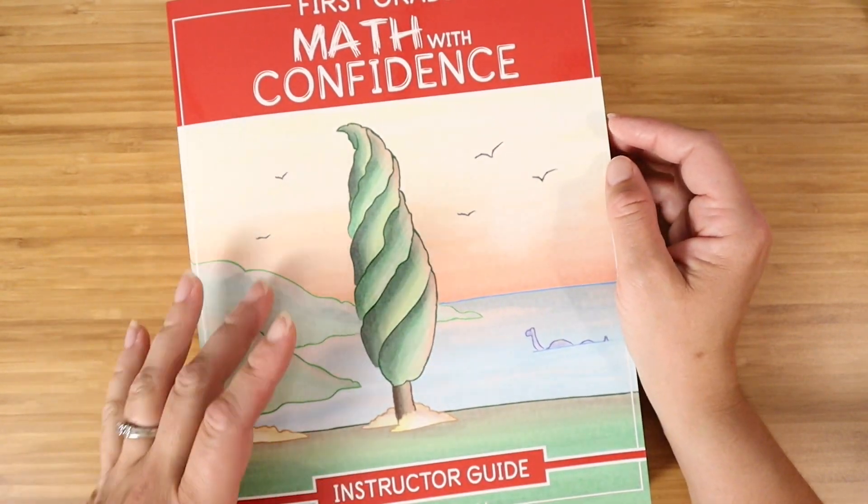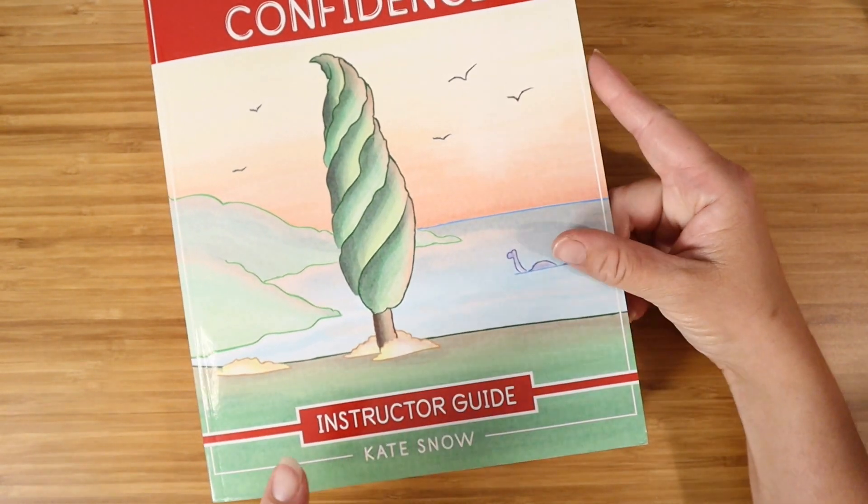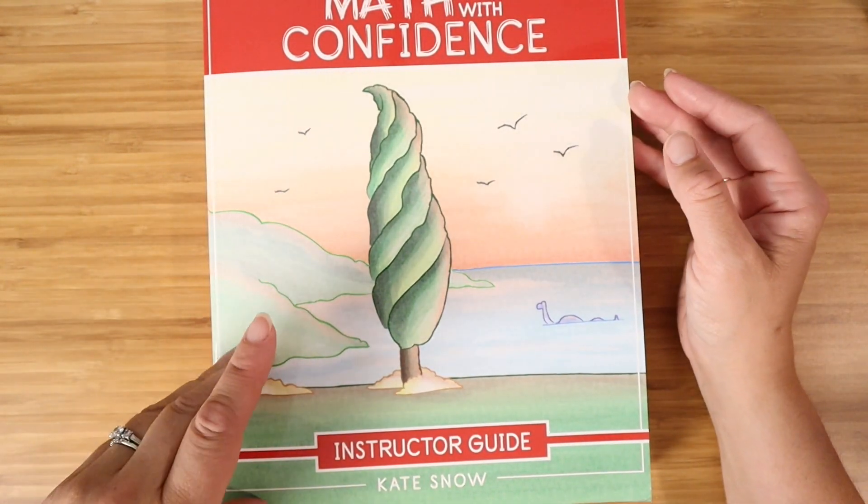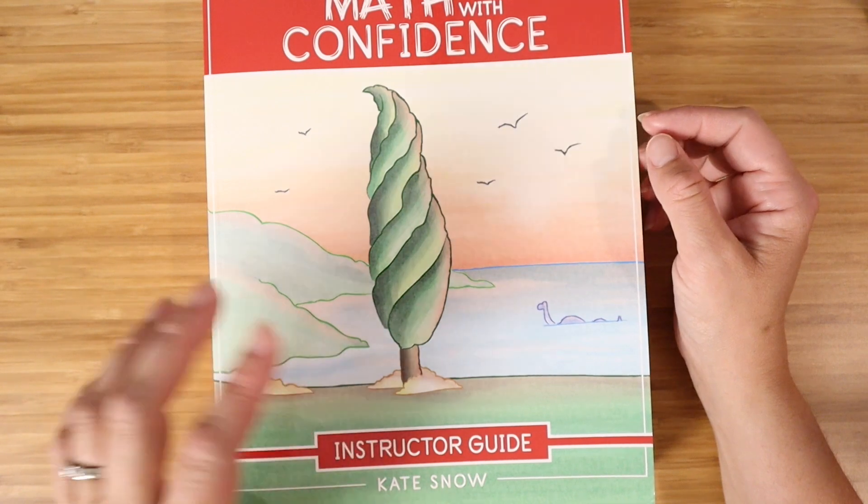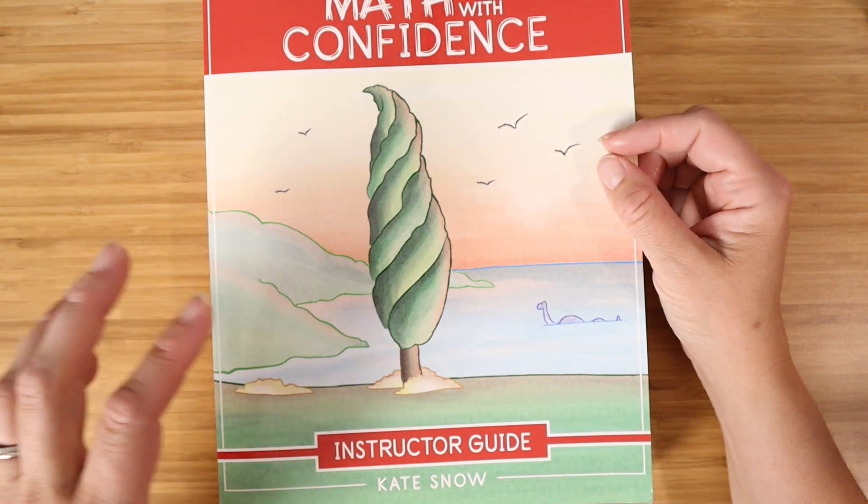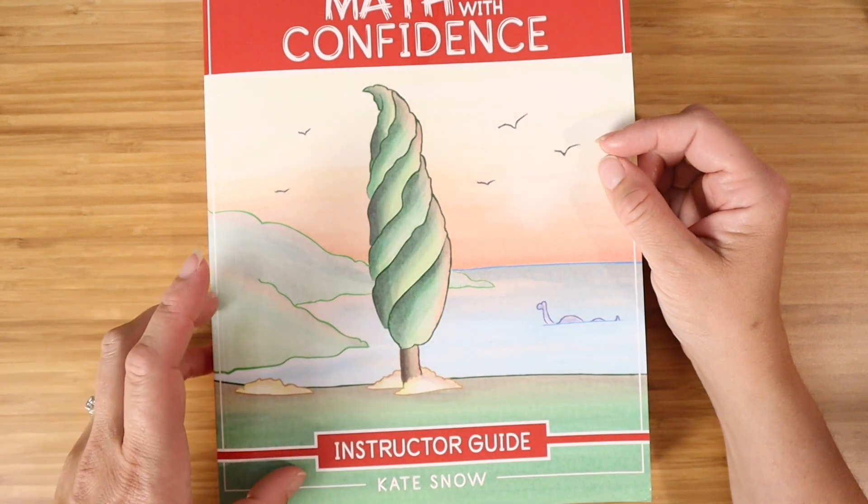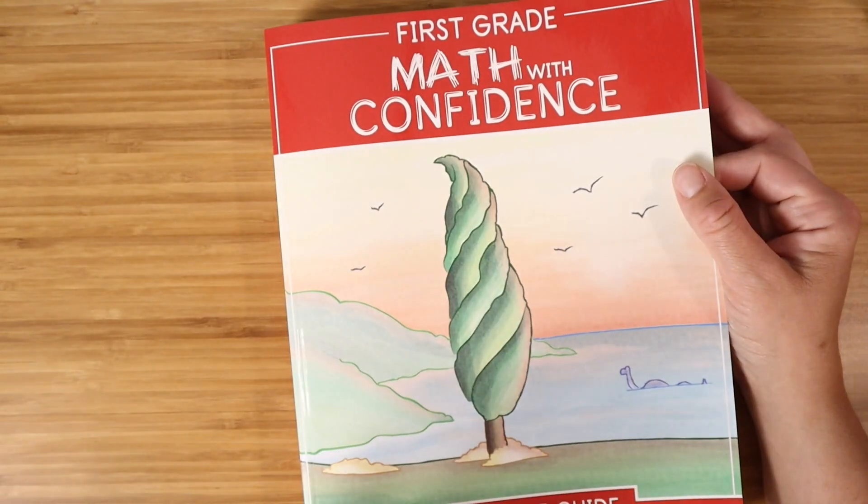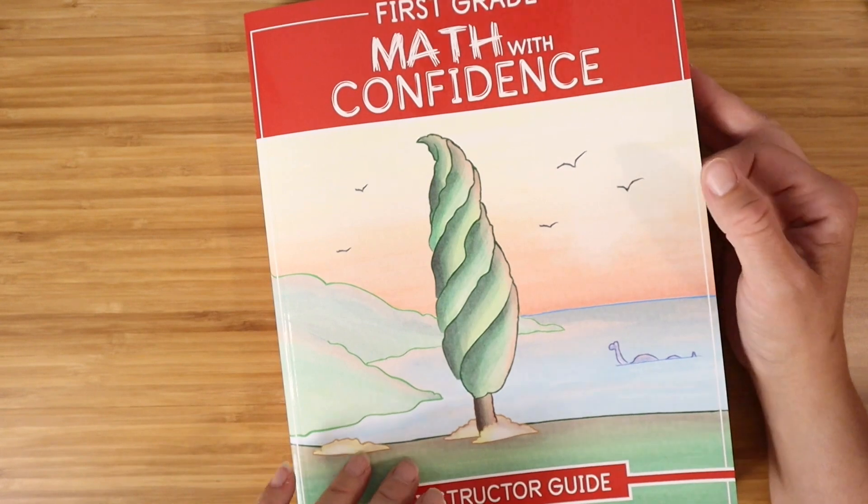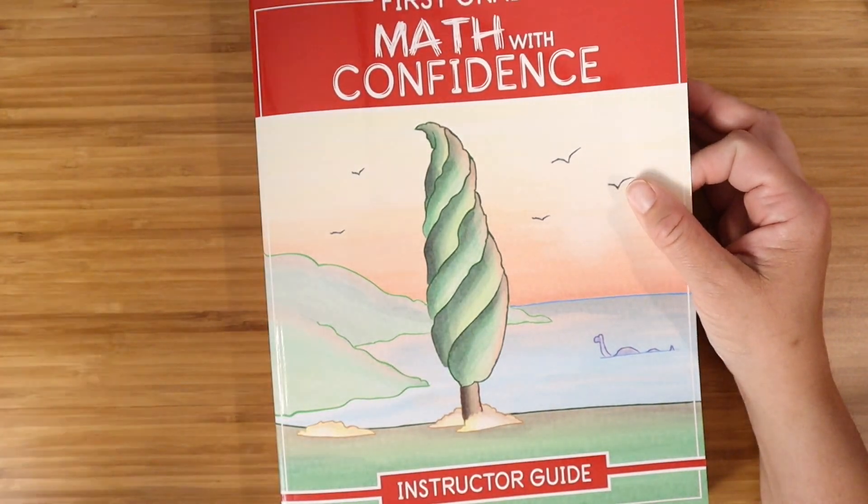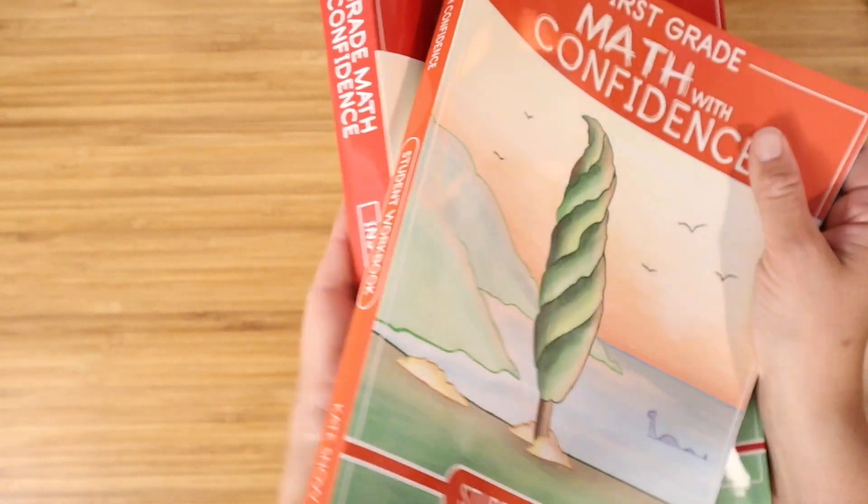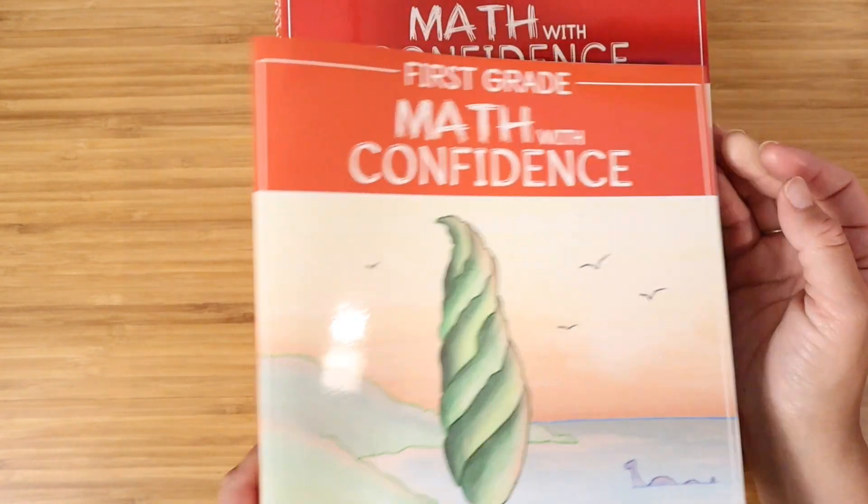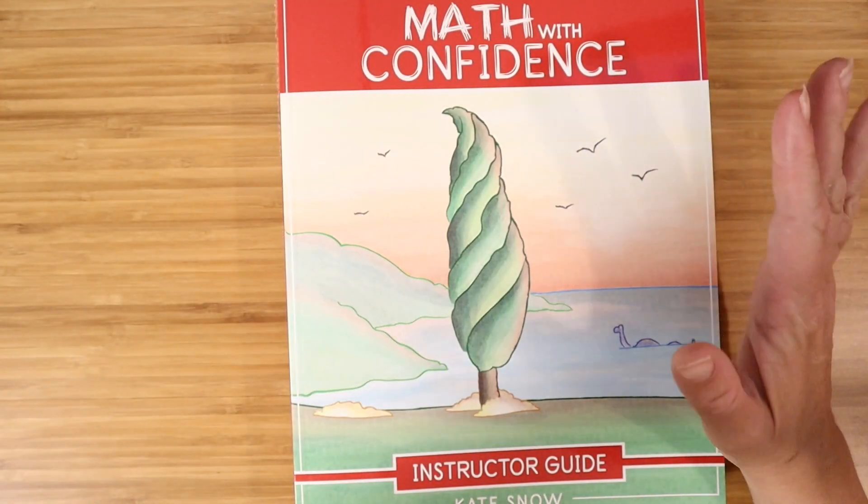Math with Confidence is a math curriculum written by Kate Snow. Kate Snow is the perfect person to be writing a homeschool math curriculum, in my opinion, because she is a homeschool mom. She has taught math in a classroom setting, and she has degrees from Harvard in math and education. If there's anyone who is qualified to create a math curriculum with homeschoolers in mind, it's her.